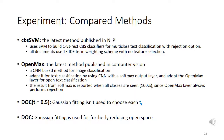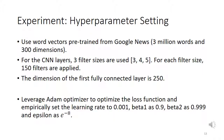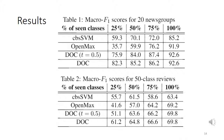We compare our method DOC with CBSSVM, the latest method published in NLP, and OpenMAX, the latest method published in Computer Vision, as well as DOC with the default probability threshold of 0.5 (without Gaussian fitting). From the results on both datasets, DOC outperforms state-of-the-art methods CBSSVM and OpenMAX.